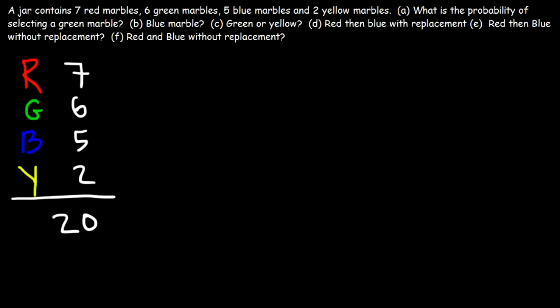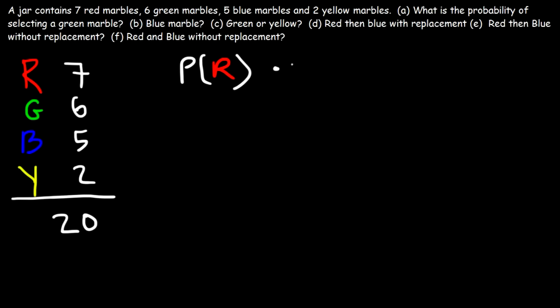What is the probability of getting a red marble and then a blue marble with replacement? This is an AND statement — we need to get red on the first try and blue on the second try. Whenever you have an AND statement, you need to multiply. So we multiply the probability of getting a red marble times the probability of getting a blue marble. The probability of getting a red marble on the first try is 7 over 20, since there are 7 red marbles out of a total of 20.